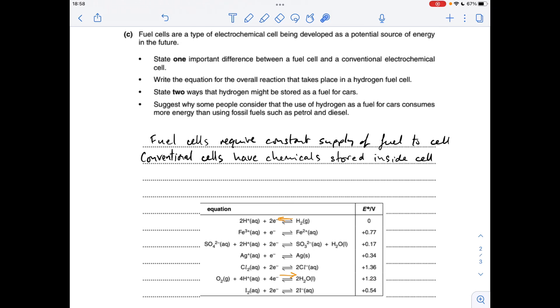So +1.23 volts is more positive than 0, so this half equation runs left to right, this one runs right to left. I'm going to double this one and add it to that one, so the electrons are four on each side and they'll cancel out. Gives us an overall cell reaction of that there.